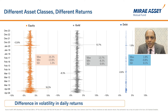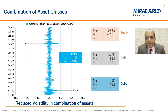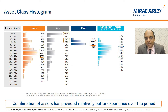Clearly, equity and gold have been more volatile while debt has exhibited relatively lower volatility or return divergence. Now, looking at how a combination of these three asset classes behaves for the same time frame, interestingly a combination of 65% equities, 20% in debt, and 15% in gold has displayed relatively lower volatility and return divergence compared to standalone equity or gold.